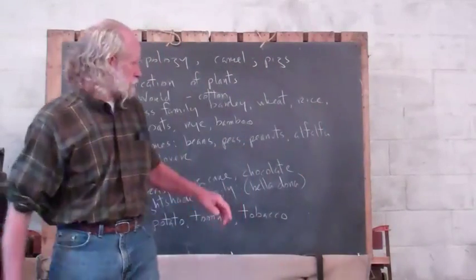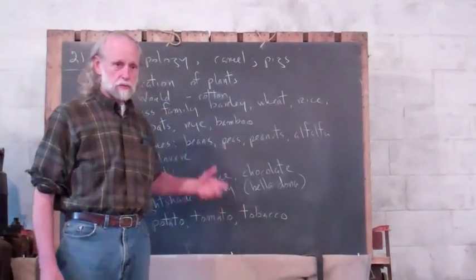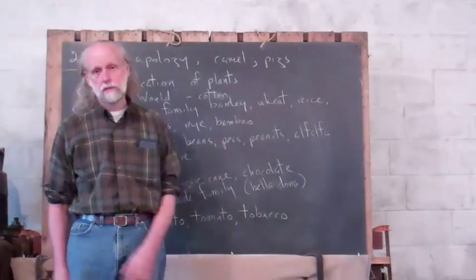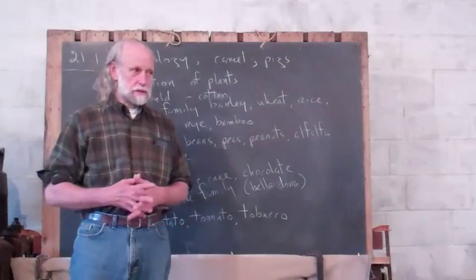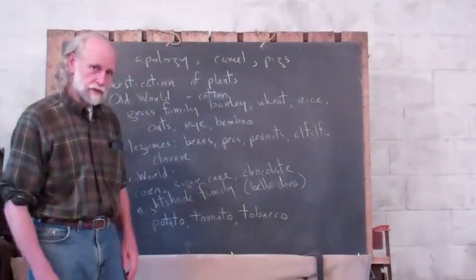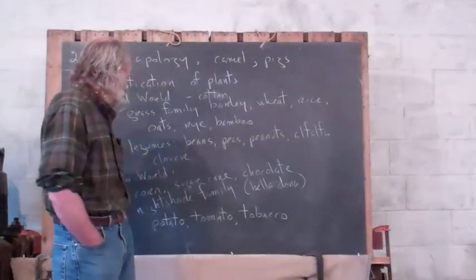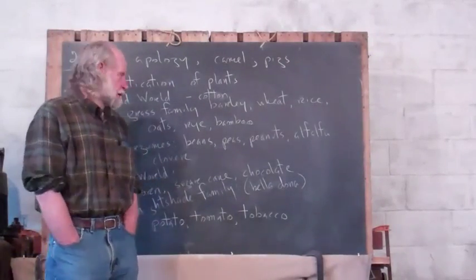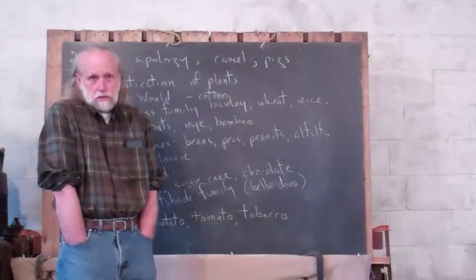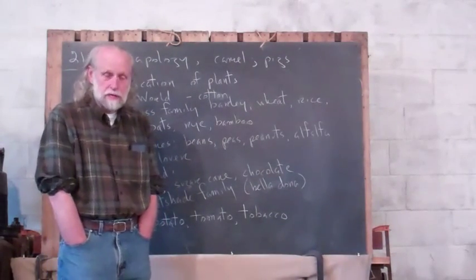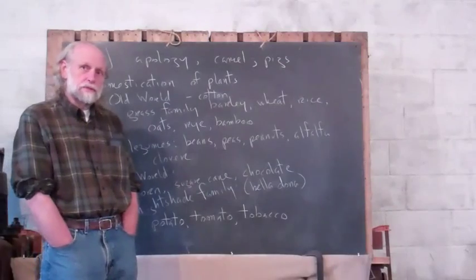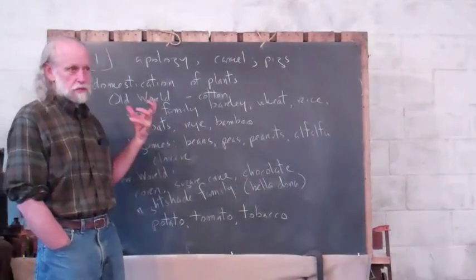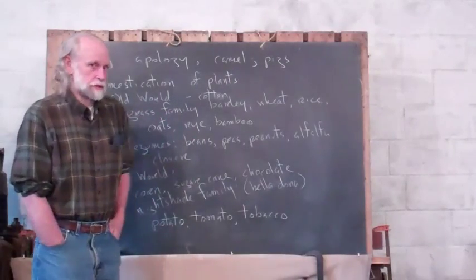Wheat, enormously important. In the American diet, wheat is the most important food. These are grasses. Rice is a grass. It is feeding more people worldwide, I think, than any other plant. Oats is a grass. Rye is a grass. These are food plants. Bamboo is a grass. It's not used for food. Well, bamboo shoots are tasty. But it's used to build things. The grass family is enormously important to humans.